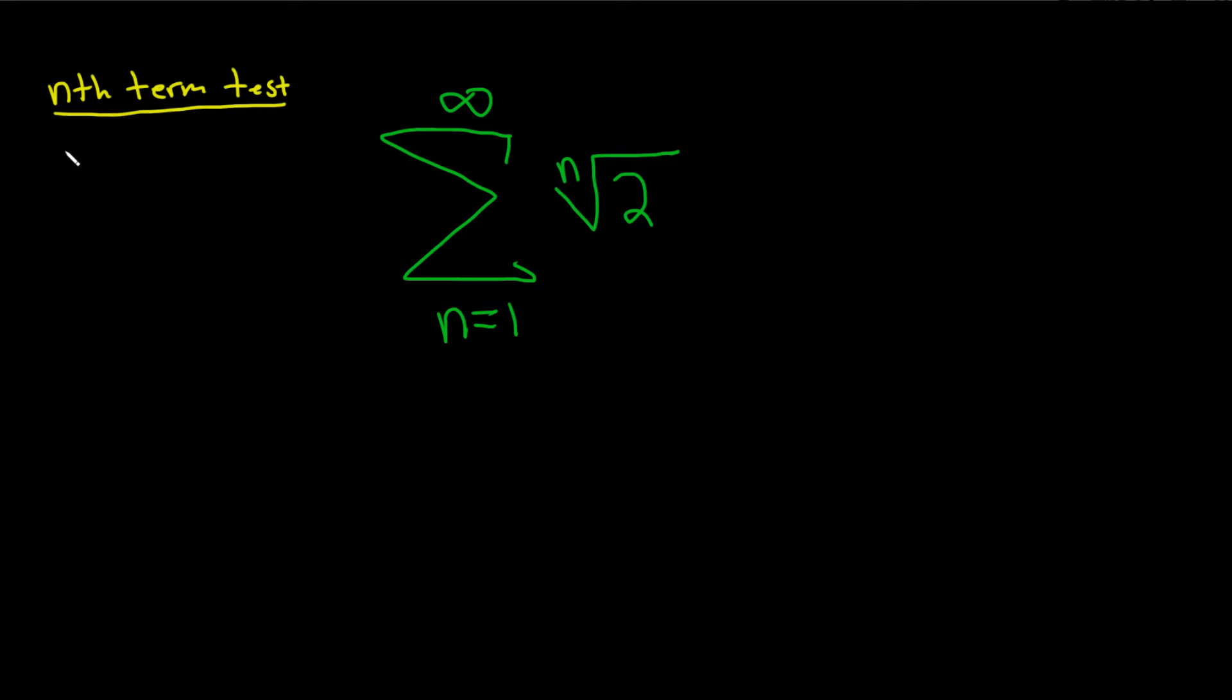So the nth term test is a really good test to try. So it basically says if you have an infinite series, say the sum of the a's, and you take the limit as n approaches infinity of a sub n, and you don't get zero. So if you take this limit and you don't get zero, then the series diverges. You have a divergent series.